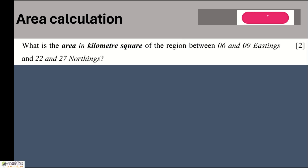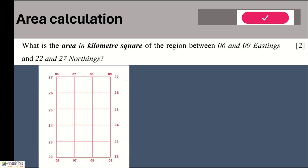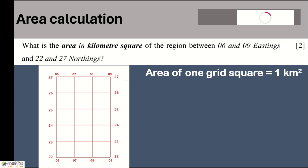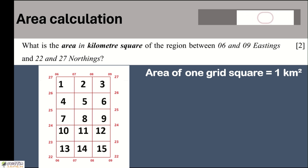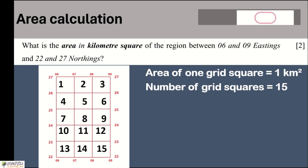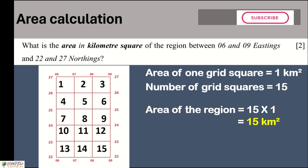A typical board exam question asks: what is the area in square kilometers of the region between eastings 06 and 09 and northings 22 and 27? We don't need the map itself — just those grid squares. The simplest method is to count the total number of grid squares within the region. There are 15 grid squares, and each represents 1 square kilometer, so the total area is 15 square kilometers.